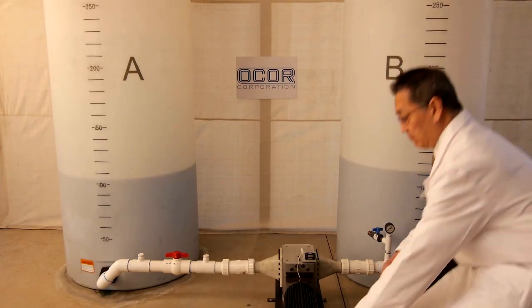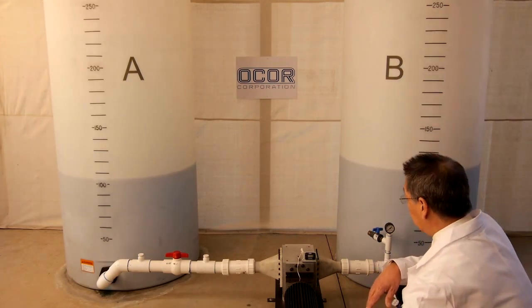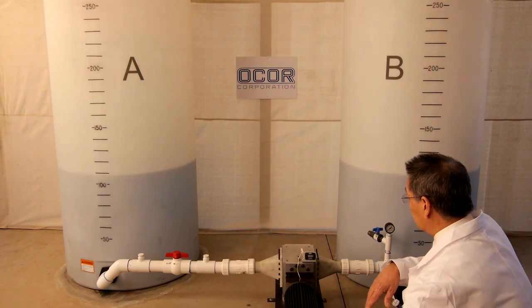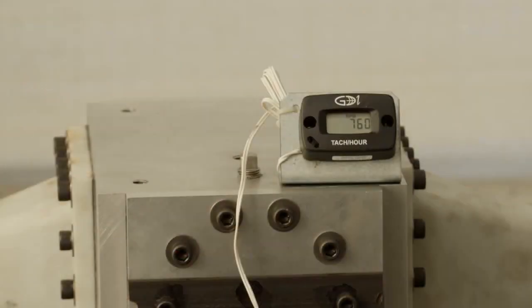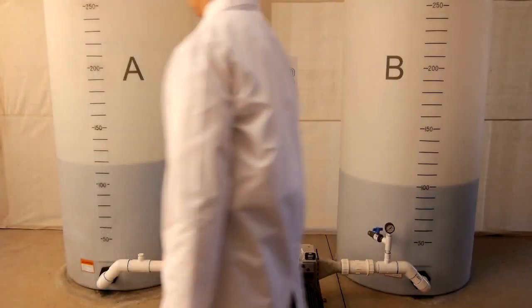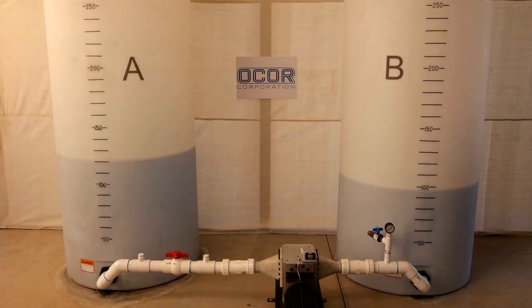For our next demonstration, the shaft speed will be increased to 800 RPM in the reverse direction, flowing from tank B to tank A. We have now stabilized the speed at 800 RPM, which corresponds to a flow rate of 68 gallons per minute. We will run at this speed for a little over one minute, transporting approximately 50 gallons.